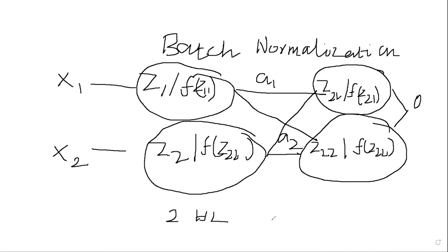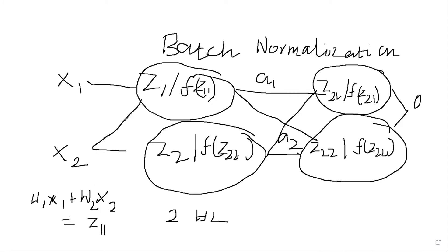So what will happen during training is that the first data will be fed forward. We have two inputs x1 and x2, and we compute w1*x1 + w2*x2, which equals z11. So z11 is nothing but w1*x1 + w2*x2. The z value is then sent as input to the activation function, and the output we get is a1. Similarly, a2 is the activation output for the second neuron.